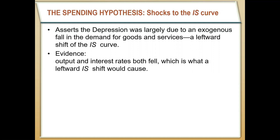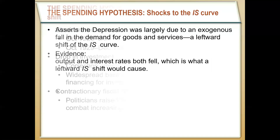As the Depression progressed, we saw prices start to fall, which we would predict would happen to bring us back to our long-run equilibrium. Keynes put forward three primary explanations for this leftward shift in the IS curve.